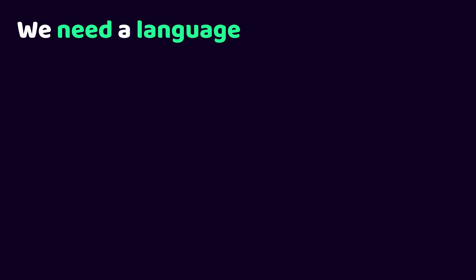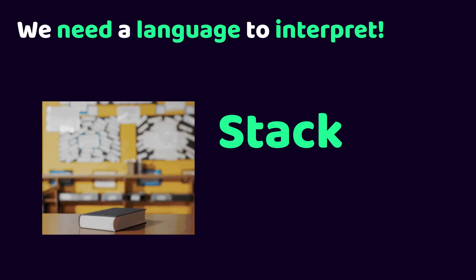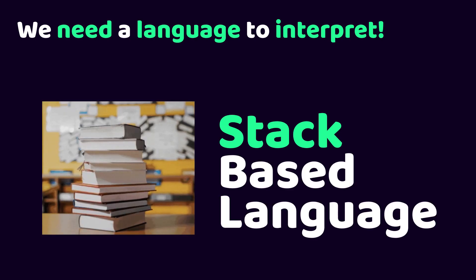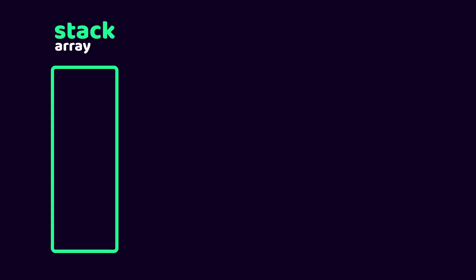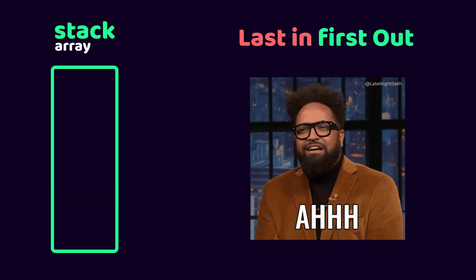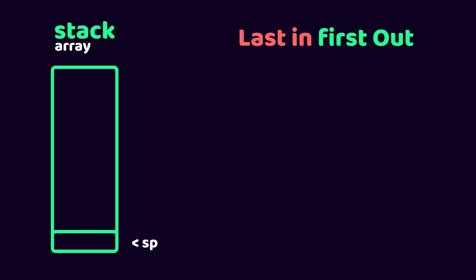Now that we know what an interpreter is and how it's different from a compiler, we need a language to interpret. The language we are going to create for our interpreter is a stack-based language, which means all its memory management is done on a so-called stack. A stack is just like an array, starting at index 0 and ending at index n-1. But unlike an array, a stack is a last-in-first-out data structure, relying on a stack pointer which points at the top element of the stack, and two main operations: push and pop.